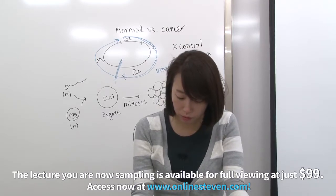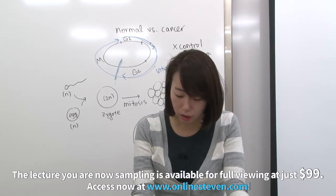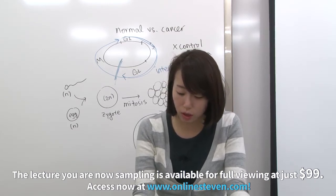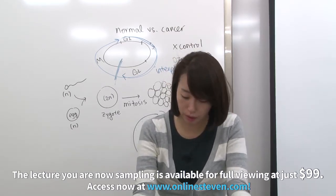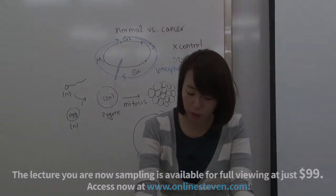Number eleven, which of the following is not found in plant cells? Cell plate. B, cleavage furrow is not found in plant cells, right? It's only found in animal cells.